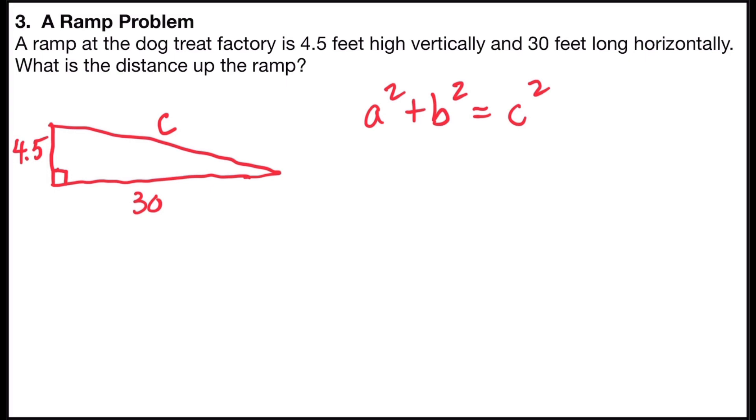And so we'll substitute 4.5 squared plus 30 squared is equal to the length of the hypotenuse squared, or the distance up the ramp.